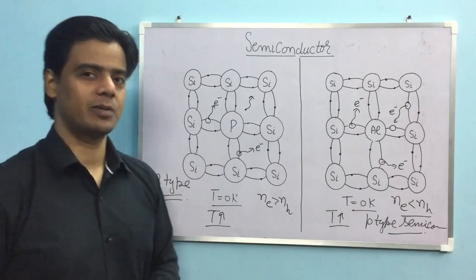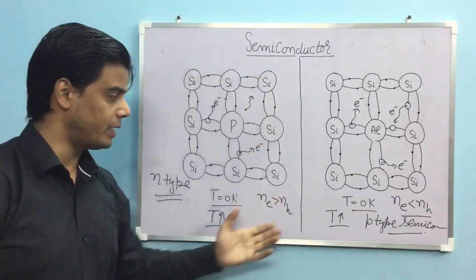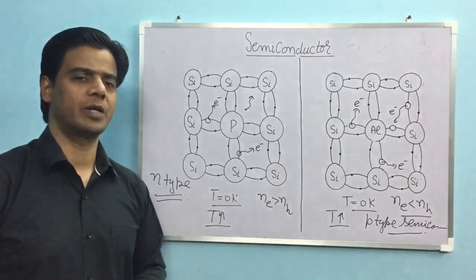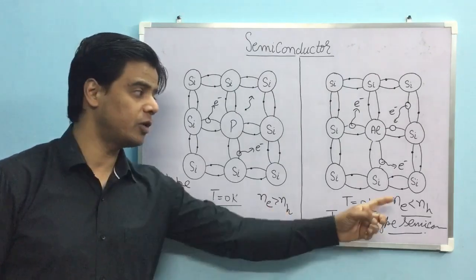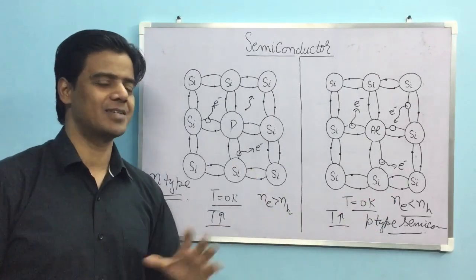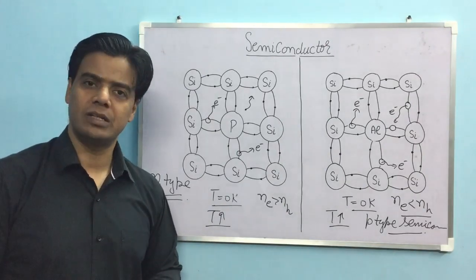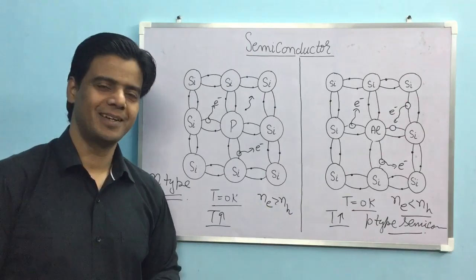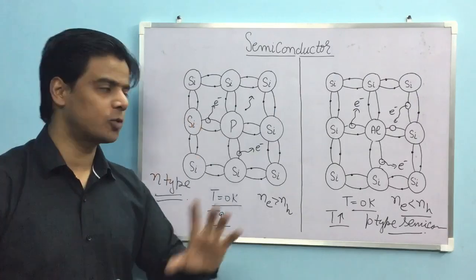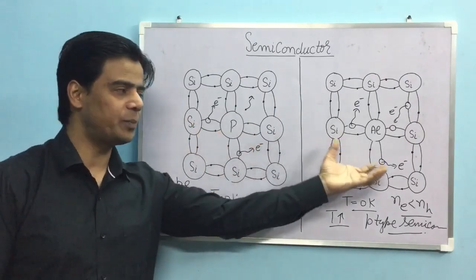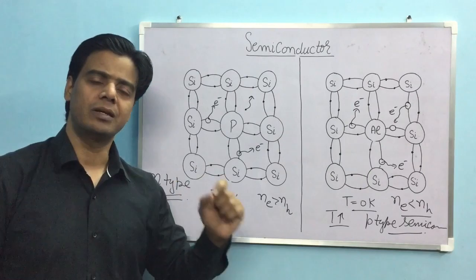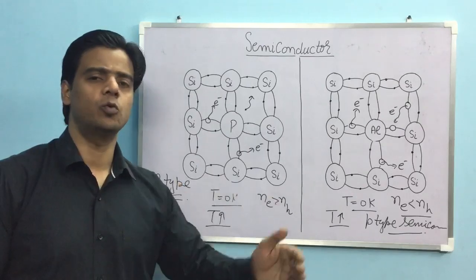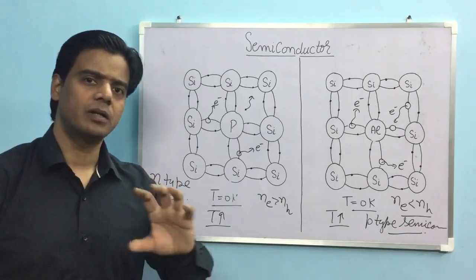Now I will tell you an important question: are N-type and P-type semiconductors electrically neutral, uncharged, or charged? Because the number of charge carriers is unequal, many students think it is charged. But this is not true. Whether it is intrinsic, N-type, or P-type, all semiconductors are electrically neutral. To check electrical neutrality, we never compare electrons with holes — we compare the number of electrons with number of protons.